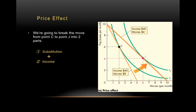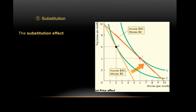What we're going to do is divide up this price effect into substitution effect and income effect. To get from point C to point J, we're going to make another stop. Let's start with the substitution effect. When the price of movies falls, movies become relatively cheaper as compared to pop.